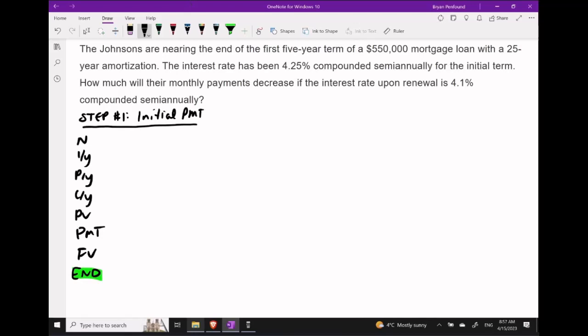In step one, let's try to determine what the initial payment size was. Throughout the question, let's assume that we are making month-end payments. Since their initial mortgage was a 25-year term with monthly payments, that implies that N should be equal to 300. Our initial interest rate was 4.25% compounded semi-annually, and we were making monthly payments. The initial mortgage amount was $550,000. And over the span of the 25 years, we do expect to pay this off, so let's take FV to be zero.